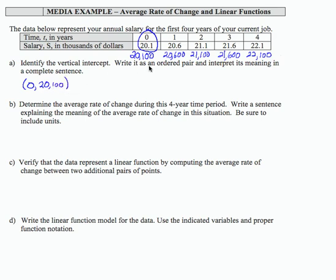As meaning to that ordered pair, what it means is that when I start my job, my salary is $20,100. So I'm going to take a minute and write that in the space here. So in words then written out, when I start my job, my annual salary is $20,100. So again, I'm relating the input quantity which is zero with the output quantity of $20,100.